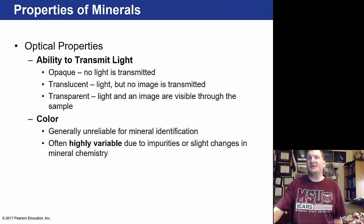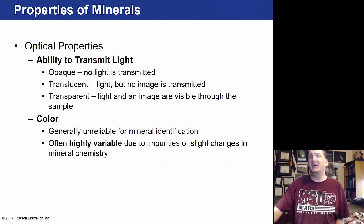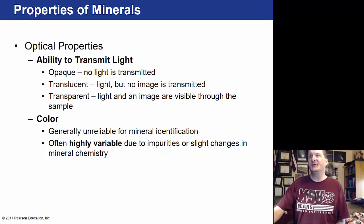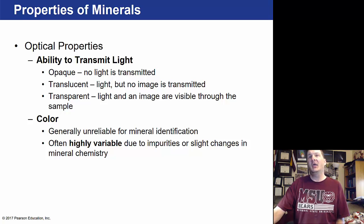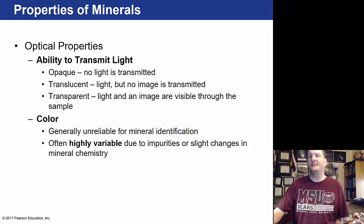Another property is the ability to transmit light. If a mineral is opaque, no light is transmitted. Translucent means light goes through but no image is transmitted — it's kind of a glow. Transparent means both light and an image are visible through the sample.